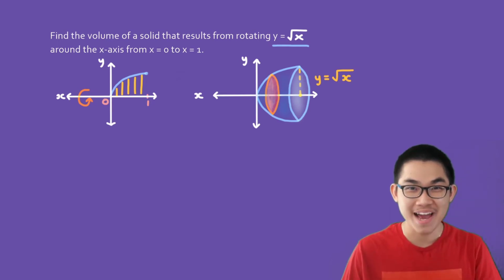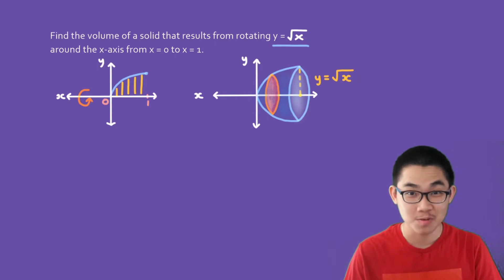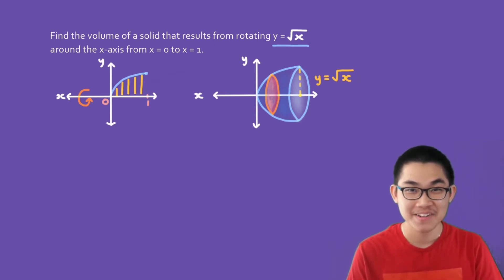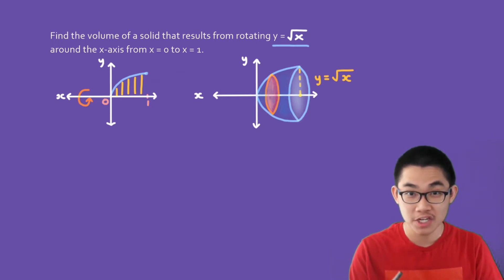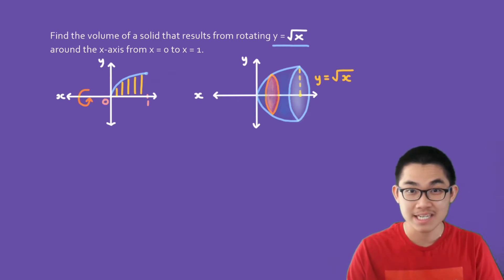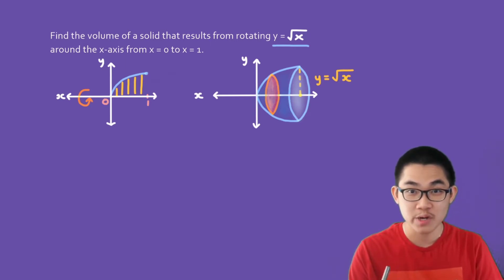Hi friends, welcome back. In this video, we're going to talk about solids of revolution. And don't worry, they're not as scary as they sound. A solid of revolution is basically when you take one function and you rotate it around an x or y axis, and that gives you a three-dimensional object.